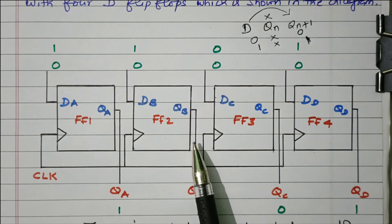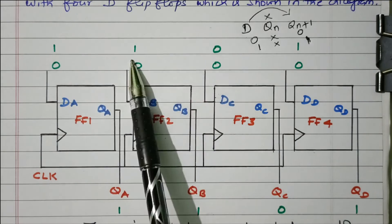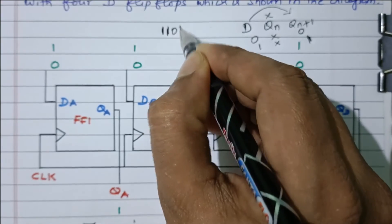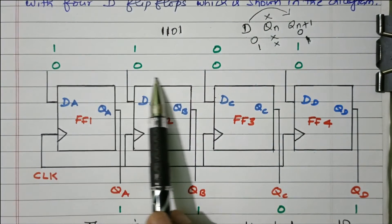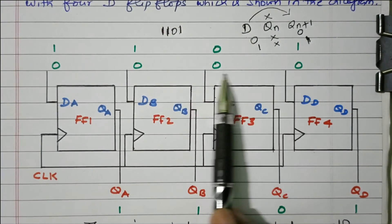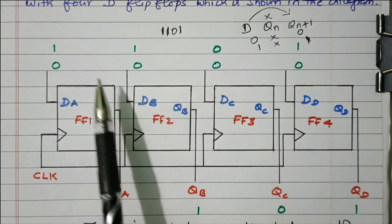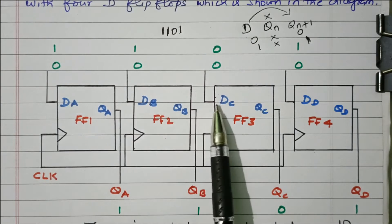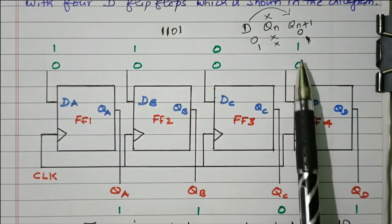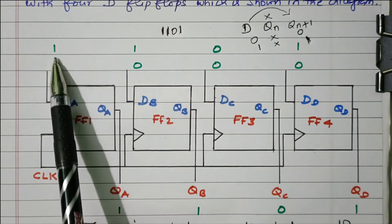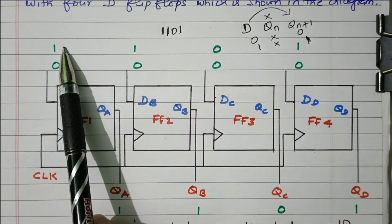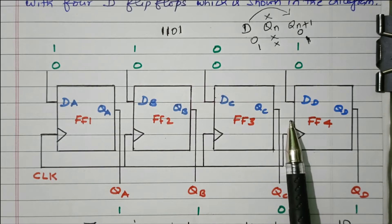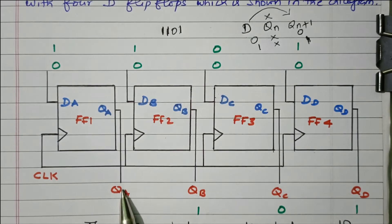Let us consider we are going to use the data 1, 1, 0, 1. Initially, all the inputs are 0. Then we parallelly apply DA as 1, DB as 1, DC as 0, and DD as 1, because what we need is 1101. Whatever data we need is given to the respective inputs of the D flip-flop, and the same thing will be available at the output.